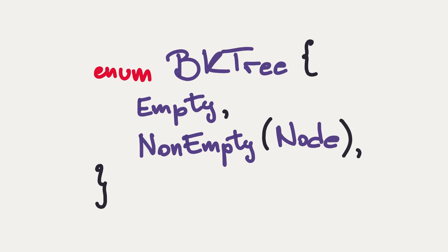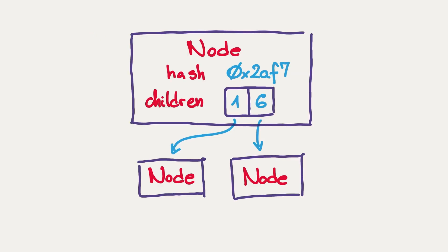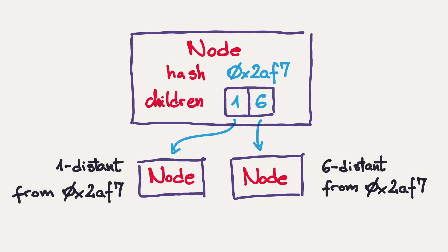If the tree is non-empty, it has a node inside. And the node looks as follows. It has a single hash and a collection of children. And now, the invariant is that all the hashes we have in a single sub-tree, a child of this node, have exactly the same distance to the current hash. It's fairly abstract. I've got a picture for you. We've got the main node and two sub-nodes which can be arbitrarily deep. And the rule is, all the stuff on the left is one distant from the top hash. All the stuff on the right is six distant from the top hash. Our hashes are 64-bit long, so we can have at most 64 children of a single node.